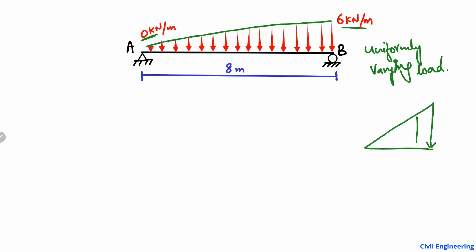We can see a triangular load acting on this beam. To find its support reaction, I will use a very simple and easy method which you can follow to find out support reactions for any kind of loading on beams. When there is a uniformly varying load like a triangular load, keep in mind you first have to find out the area of the load.